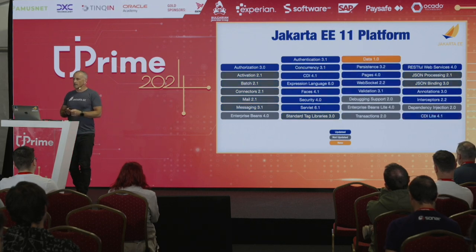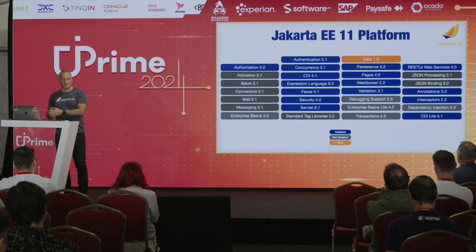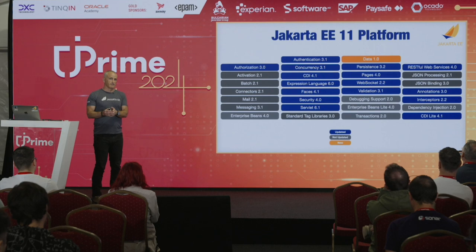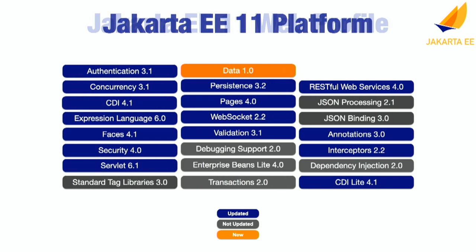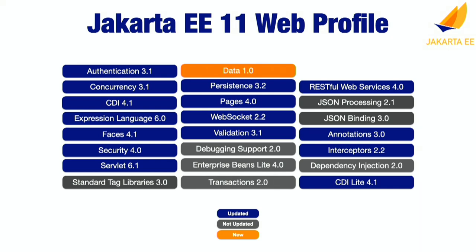We're also working on Jakarta EE 11, which will be released in July this year — just a couple of months away. The blue ones shown here are updated in Jakarta EE 11 since Jakarta EE 10. We're also adding a new specification for data that simplifies data retrieval using the repository pattern — if you know Spring Data, you know Jakarta Data; it's basically the same thing. We also have a smaller subset called the Jakarta EE 11 Web Profile, which peels away the more enterprise-flavored specifications for smaller runtimes. Jakarta Data is part of the Web Profile as well.